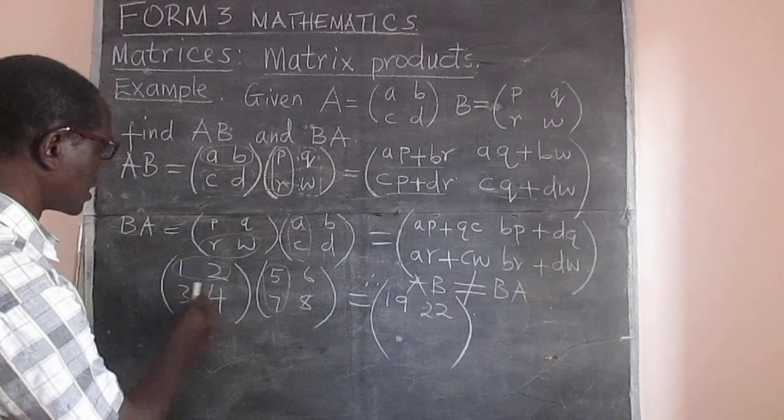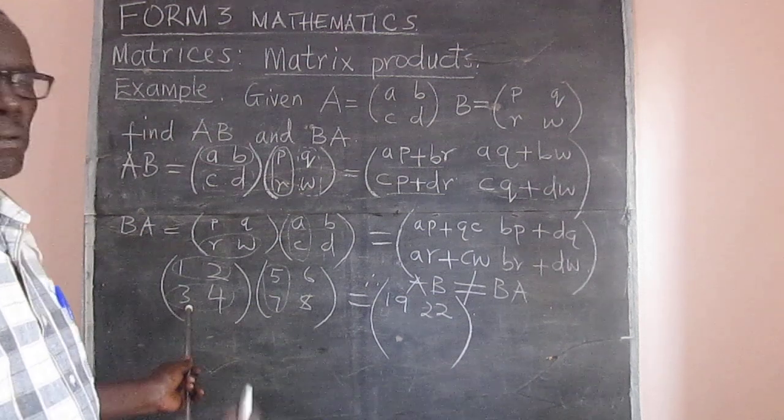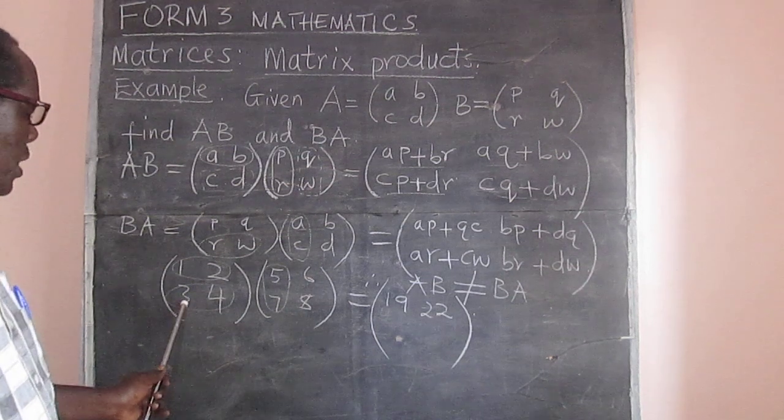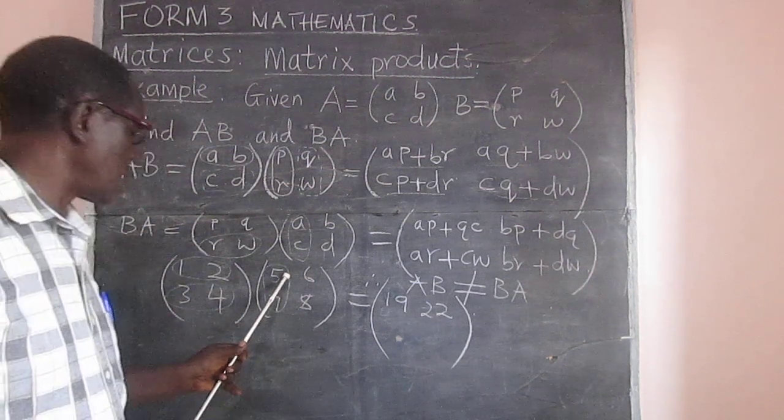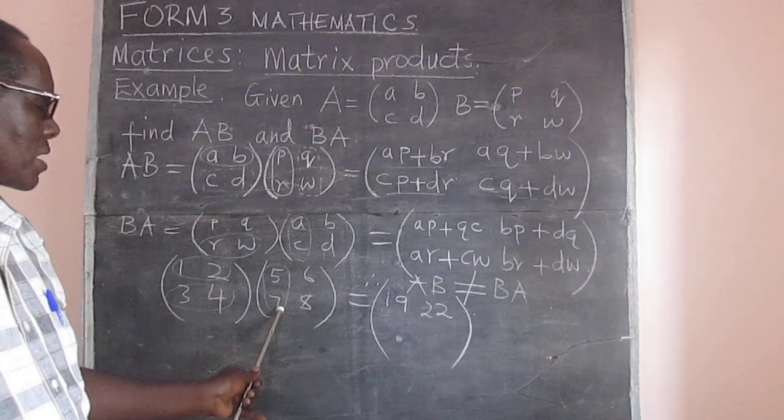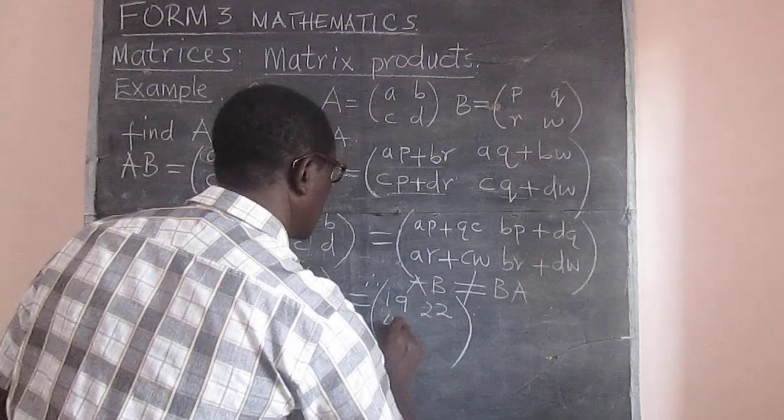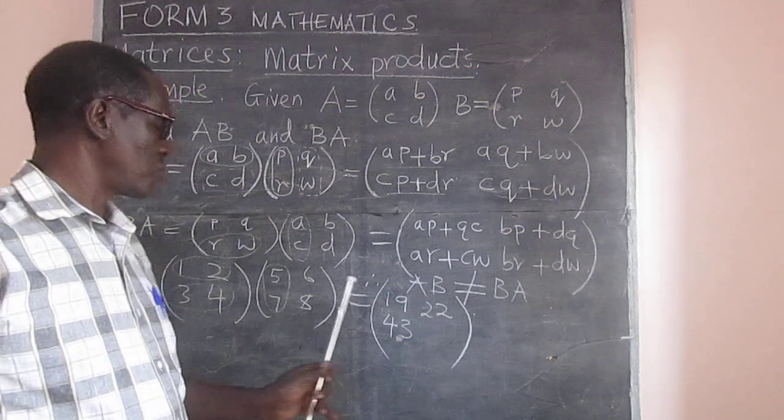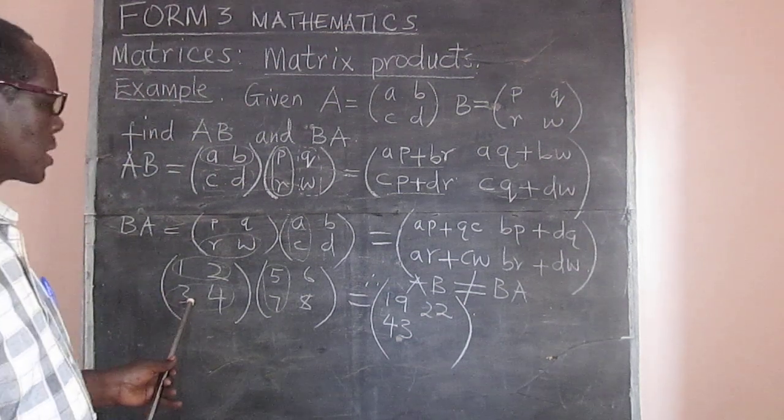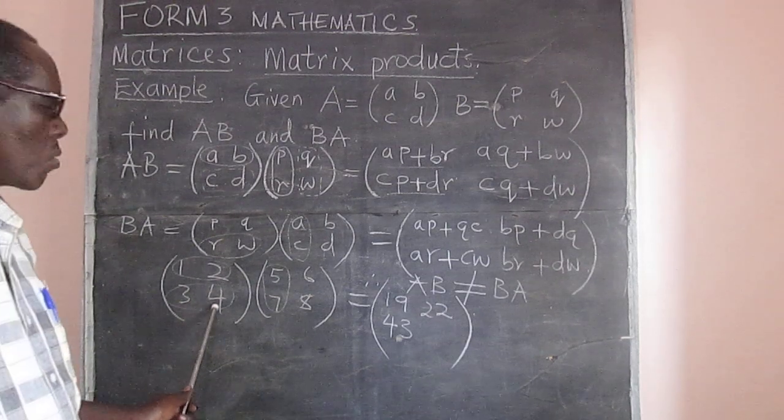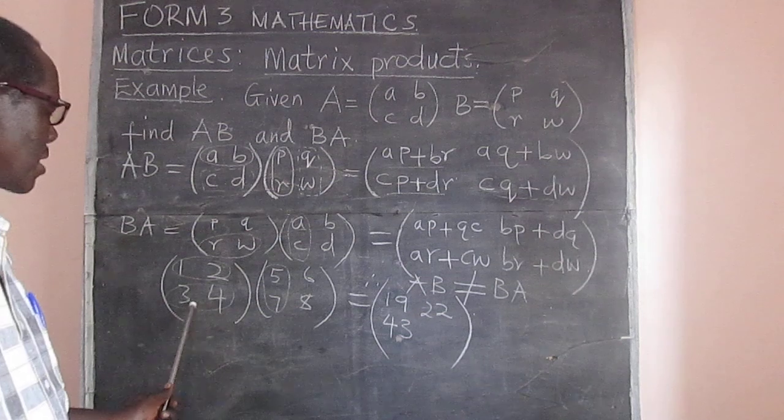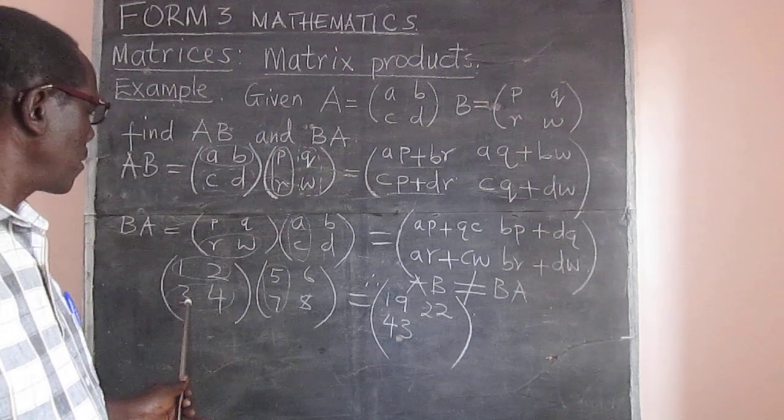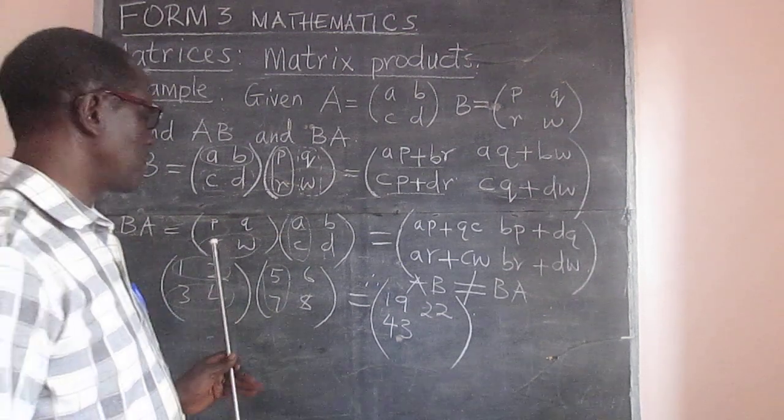Then we come to the second row, and again, we multiply, first of all, by the first column, and then by the second column. So we get three multiplied by five, that gives us fifteen, and then we add to four multiplied by seven, that's twenty-eight, so that we get forty-three. And then, like we did in the other case, we take the second row, multiplied by the second column. That gives us three times six, which is eighteen, added to four times eight, which is thirty-two. So, eighteen plus thirty-two, which is fifty.